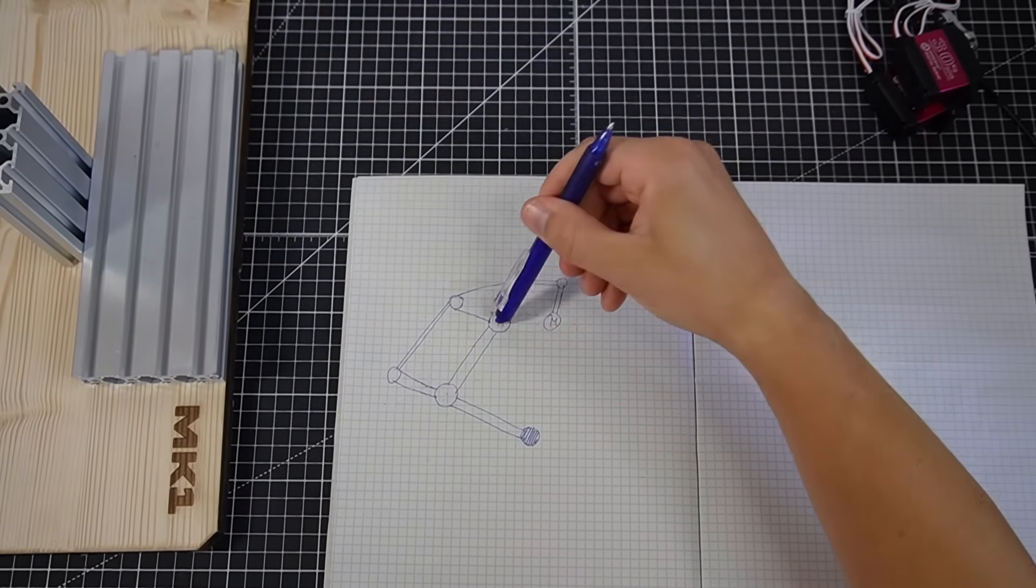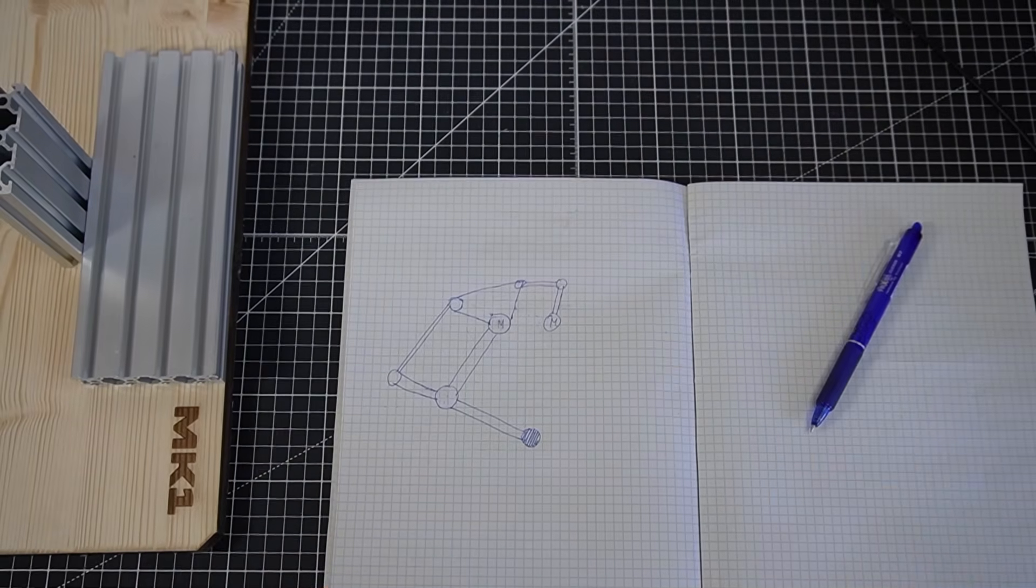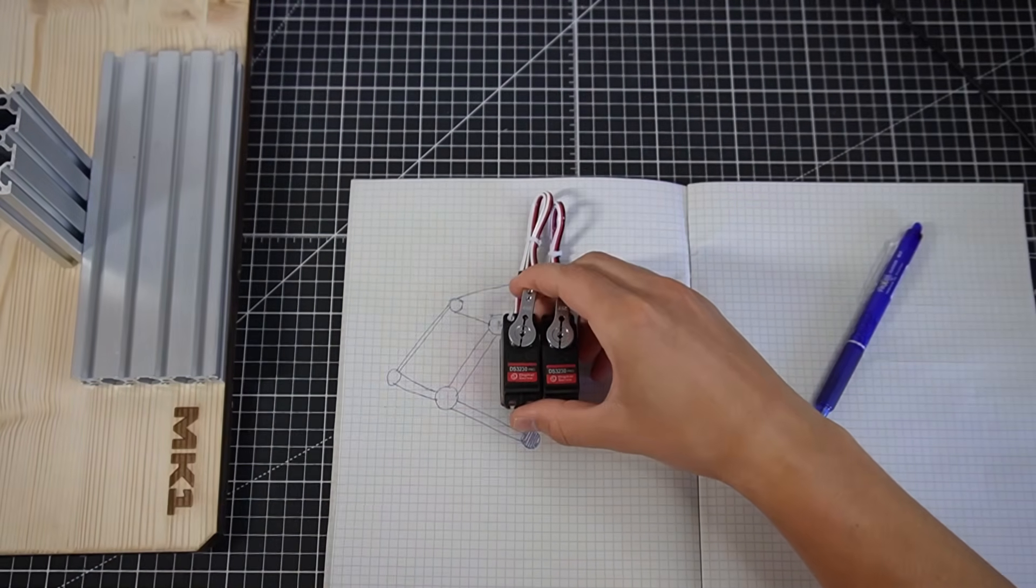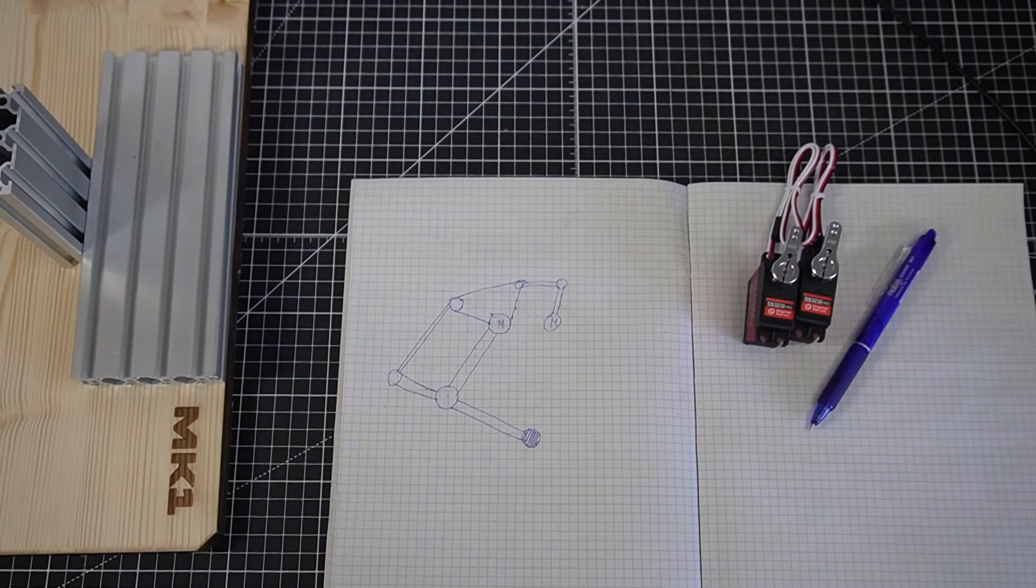We also still have the other motor, which rotates the whole linkage like this with some curious. Now the two heavy motors can be positioned next to each other and move the whole linkage, which has a lower inertia.